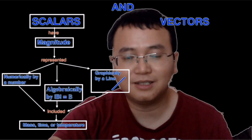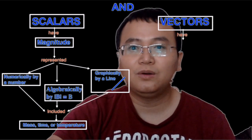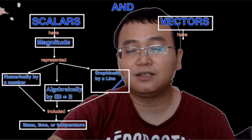Like 50 kilograms, it's just a numeric value. Okay, so you probably can guess what vectors are.